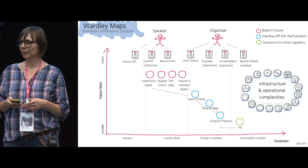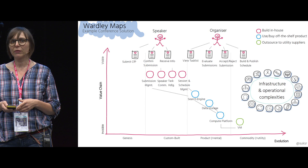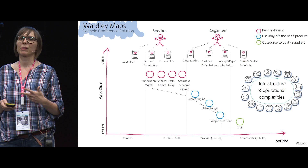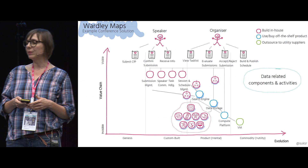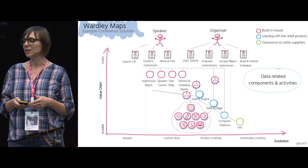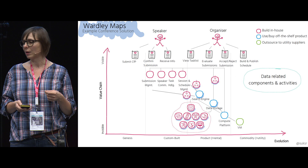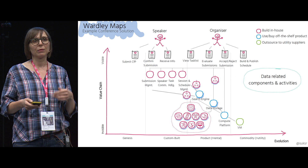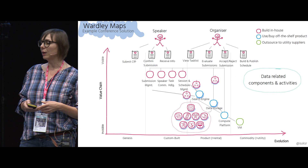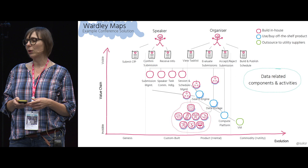Let's come back to the infrastructure and operational complexities. I'd like to approach the mapping of these by three different perspectives: the data perspective, the general service perspective, and the service interactions perspective. For our data-related components, we decided to use open-source software — for example, Elasticsearch for the search engine and MongoDB for data storage. If we run those on-premises, we have to provide activities such as configuration, backup mechanisms, recovery, maintenance, scaling, and monitoring. And these components need to be integrated into our services.